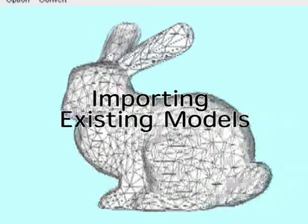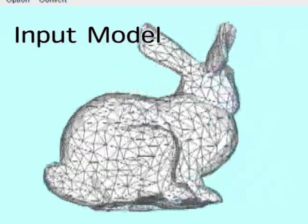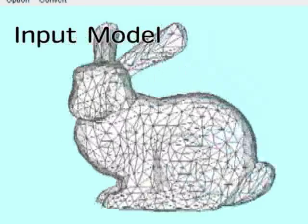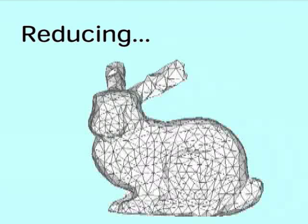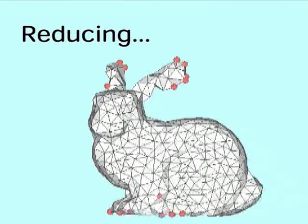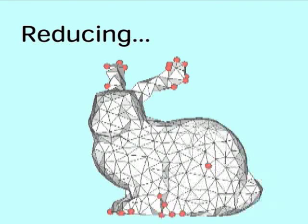The system also provides an automatic method that converts an existing model to a design model. The system first applies mesh reduction to the model until the number of edges equals the user defined target number.